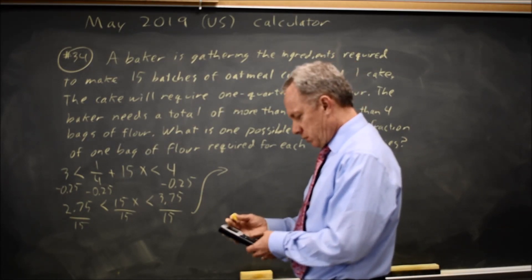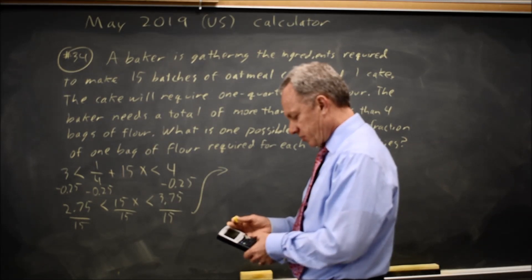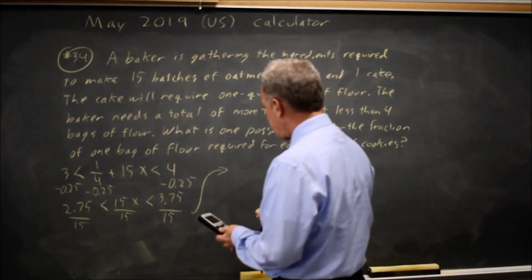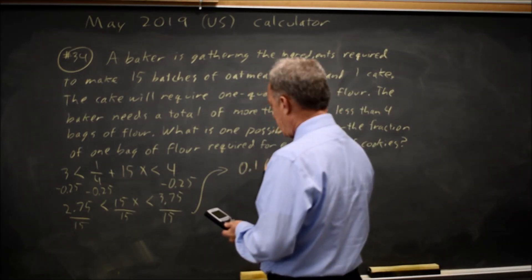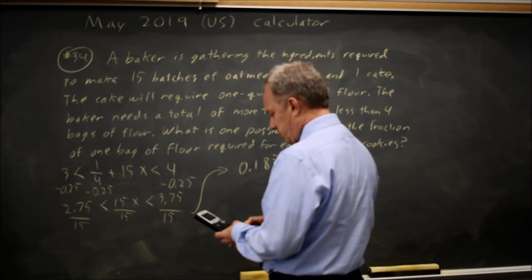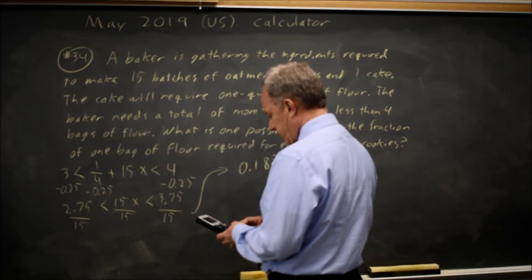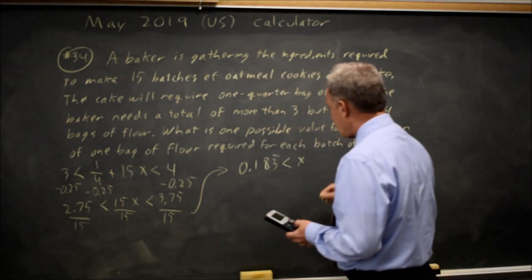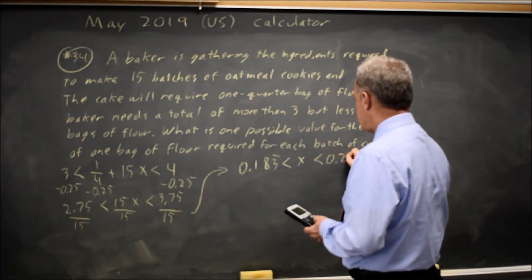2.75 over 15 gives me 0.183 repeating less than x. 3.75 divided by 15 gives me less than 0.25.